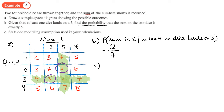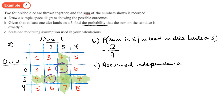Part C: state the modeling assumption. We've assumed independence — that the number one dice lands on doesn't affect the other. We're also assuming that all outcomes are equally likely.